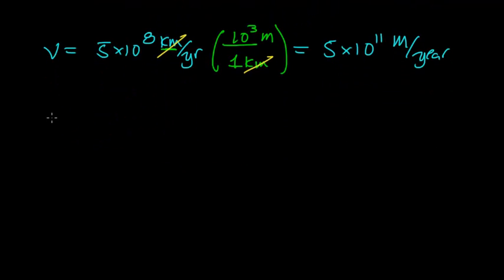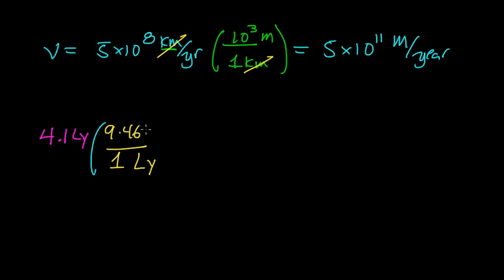The next step is to determine the distance between our Sun and Alpha Centauri in units of meters. Alpha Centauri was 4.1 light years away from the Sun. In a previous video, we figured out that 1 light year is equal to exactly 9.46 times 10 to the 15th meters. To figure out the distance between our star, the Sun, and Alpha Centauri, we multiply: the unit of light year cancels out, and when you do this multiplication out, the distance between the Sun and Alpha Centauri is 3.9 times 10 to the 16th meters.